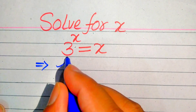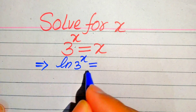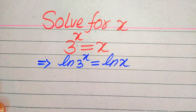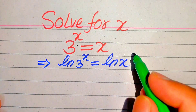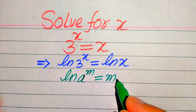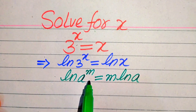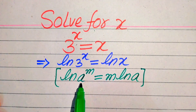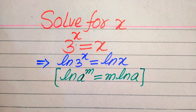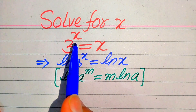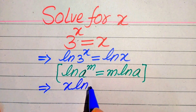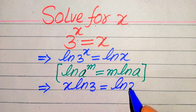We apply the natural log on both sides of this equation. It will be written as log of 3^x equals log of x. We use the property of log: natural log of a to the power of m equals m times log a. According to this property, we move this x to the front of the log, giving us x times log 3 equals log of x.